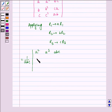So we get 1 by ABC common and determinant A square, A cube, ABC, B square, B cube, ABC, C square, C cube and ABC.